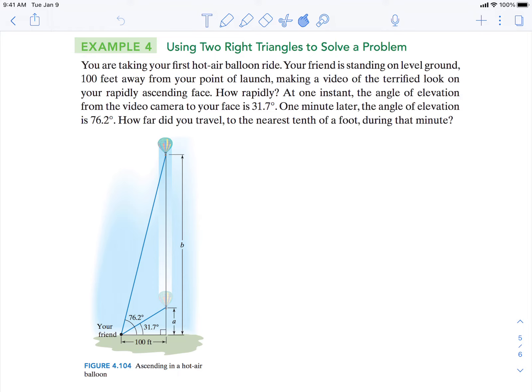All right, we're going to work with right triangle trigonometry. The example says you're going to take your first hot air balloon ride. Your friend is standing on level ground. So here is your friend, and here is the ground.